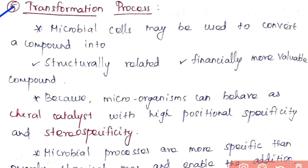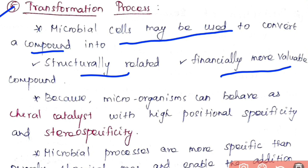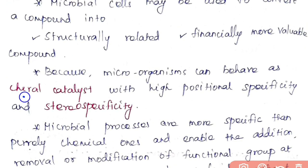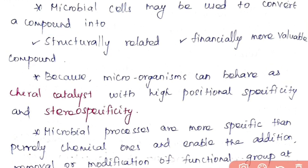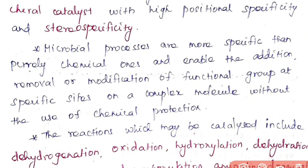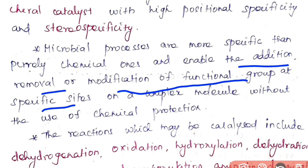The fifth process is the transformation process, where microbial cells convert a specific compound into a structurally related, more financially valuable compound. Microorganisms behave as chiral catalysts with high positional specificity and stereospecificity. Compared to chemical methods, microbial methods are more specific and enable addition, removal, or modification of functional groups at specific sites on a complex molecule without chemical protection. Reactions catalyzed include dehydrogenation, oxidation, hydroxylation, dehydration, condensation, decarboxylation, amination, deamination, and isomerization.